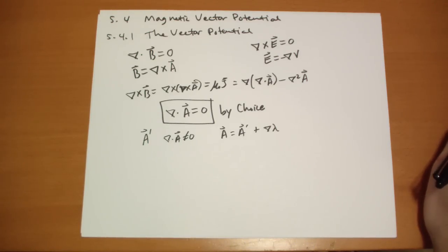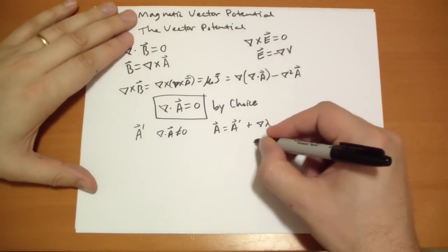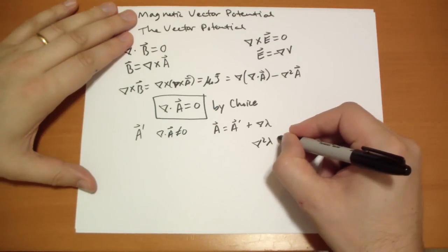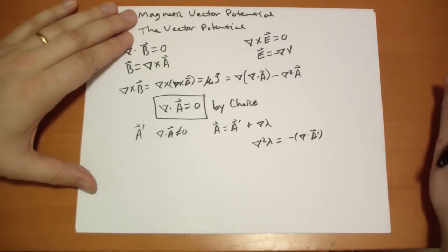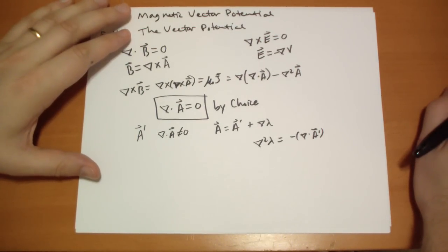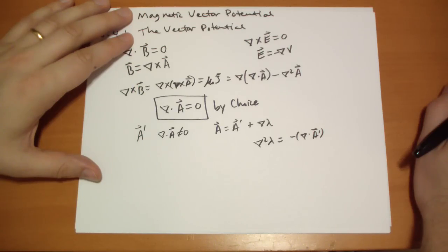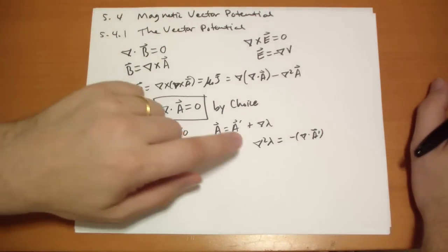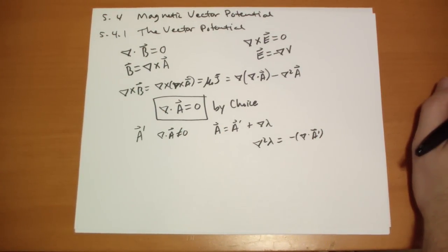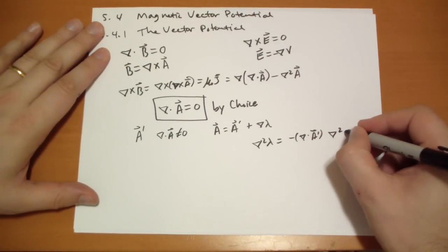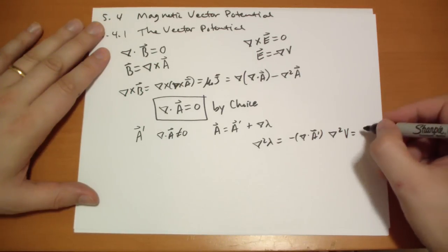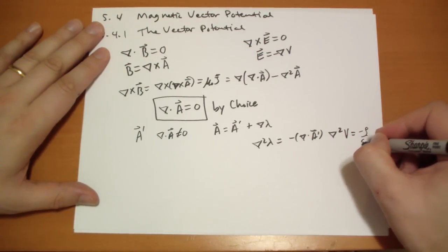And if we could find a scalar field such that the Laplacian of that scalar field is equal to minus the divergence of that A prime field that you proposed. And we look at this and we go, oh, look, this is the Poisson's equation, just like we had in electrostatics with the potential.